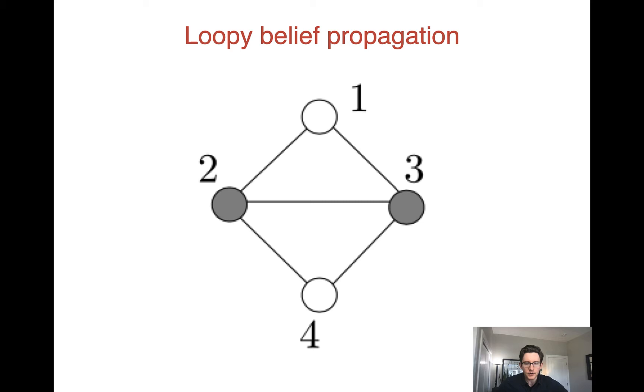But one thing we can do is we can just take that exact same algorithm and run it on a Markov random field that does have loops. So let's see what happens when we do that.